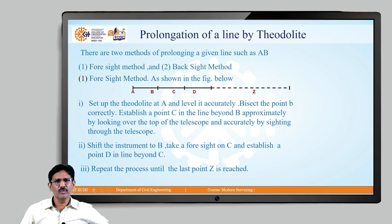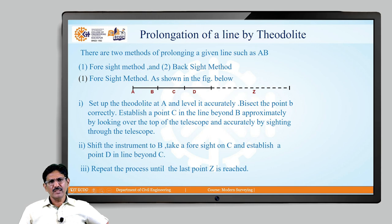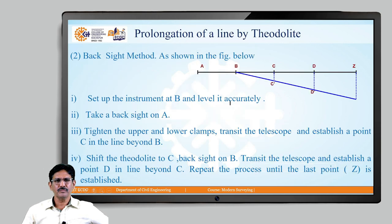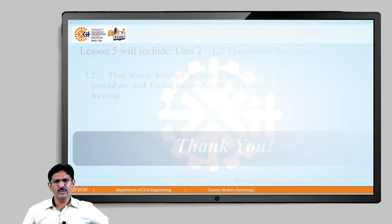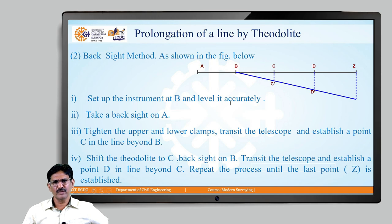A theodolite is also used for prolongation or extending a line in a straight direction. If there is a line A-B-C-D, this line can be extended using the theodolite. The instrument is kept at B or C, a backsight is taken on A, and the telescope is transited — rotated in the vertical plane — to point in the direction D or Z. By taking a backsight at A, transiting the telescope, and shifting the instrument at every point from B to C, C to D, D to Z, the prolongation of the line is completed.